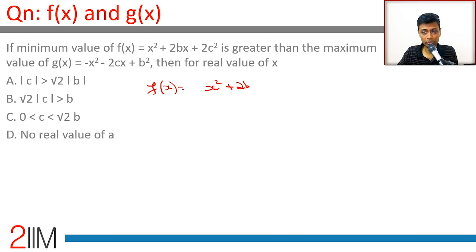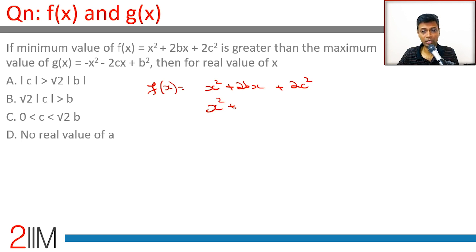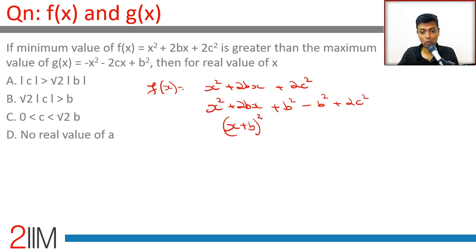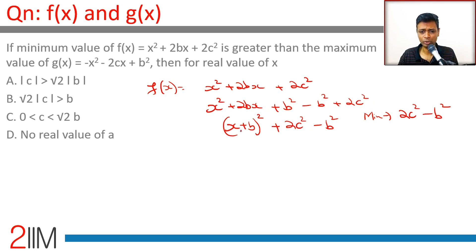f(x) = x² + 2bx + 2c². When dealing with minimum and maximum, the best method is to complete the square. Write this as x² + 2bx + b² - b² + 2c², which is (x + b)² + 2c² - b². So the minimum value will be 2c² - b², since the square term is always greater than or equal to zero. The minimum occurs when the square equals zero, giving f(x) = 2c² - b².